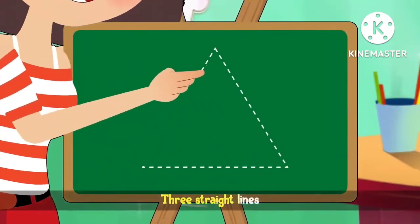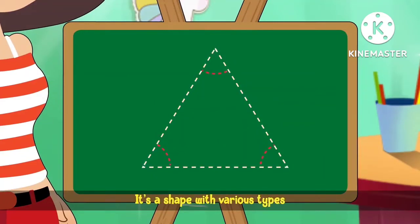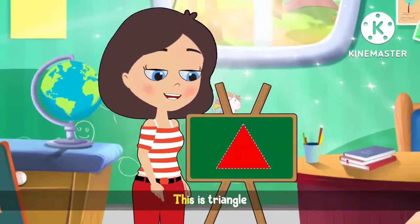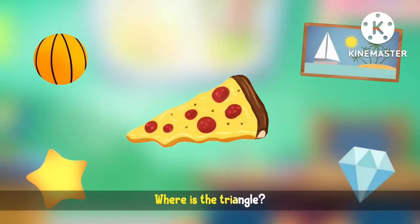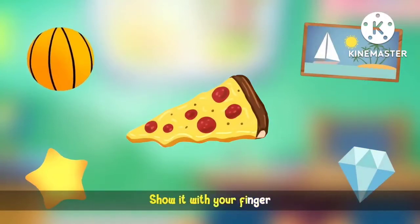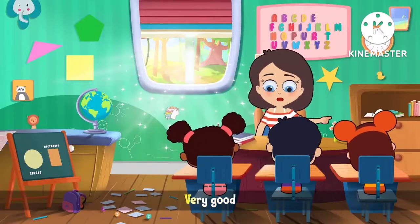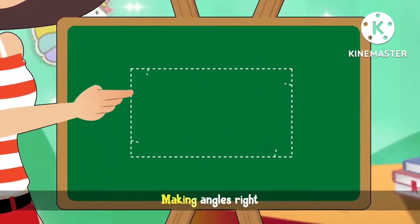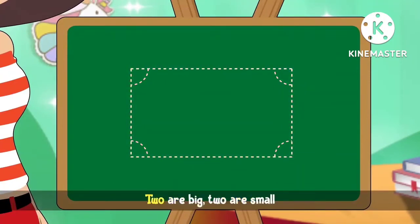Three straight lines meeting at three points. It's a shape with various types. This is triangle, triangle. Where is the triangle? Show it with your finger. Very good!